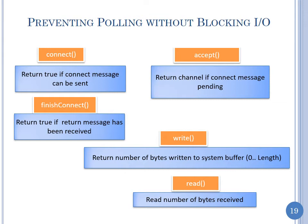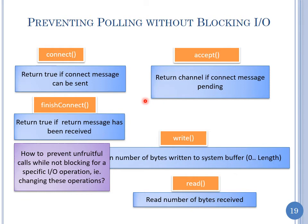Now the challenge: how do we go from these polling operations to something better? We are doing polling and we don't want that, yet we don't want multiple threads either. We want to block until there's something productive we can do, but we don't want to block for a specific particular operation. We don't want this polling read/write/accept loop where we often make calls without doing anything productive. The question is: how do we prevent unfruitful calls without blocking for a specific IO operation?